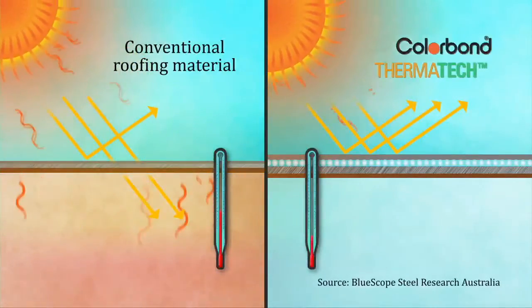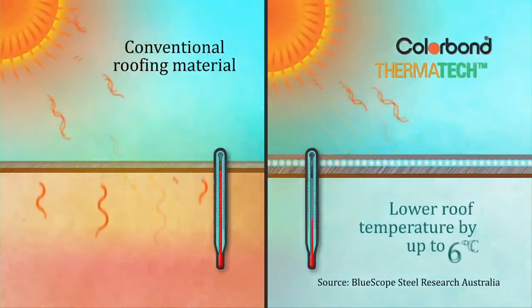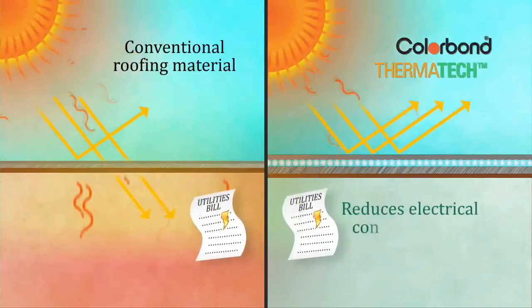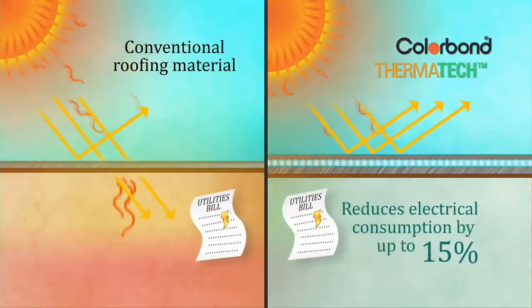...has proven that Thermatec technology lowers your roof temperature by up to 6 degrees. It also reduces electricity consumption up to 15%.